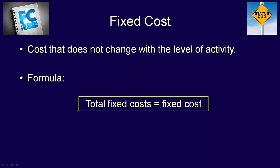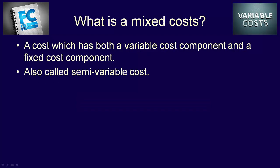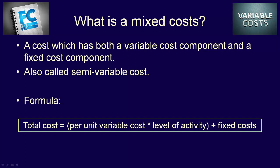What if we added these two costs together? We would then have a mixed cost. A mixed cost, sometimes called a semi-variable cost, is a cost which has both a variable component and a fixed component. The formula for a mixed cost is: total mixed cost equals (variable cost per unit multiplied by the level of activity) plus fixed cost. This is simply the variable cost formula plus the fixed cost formula added together.